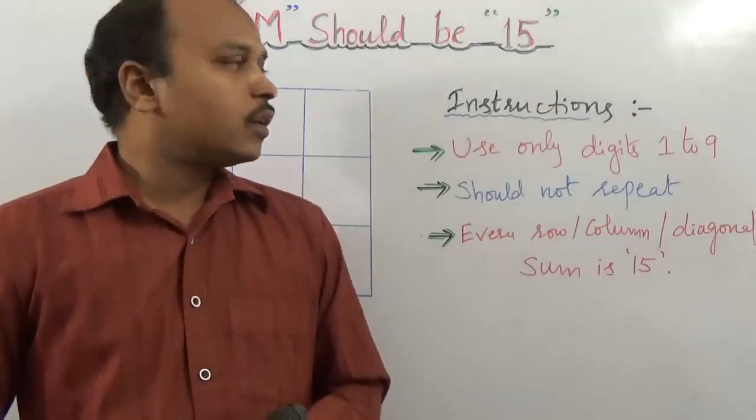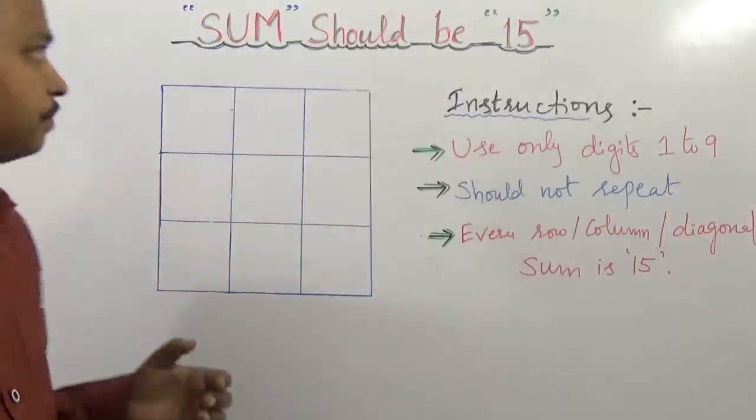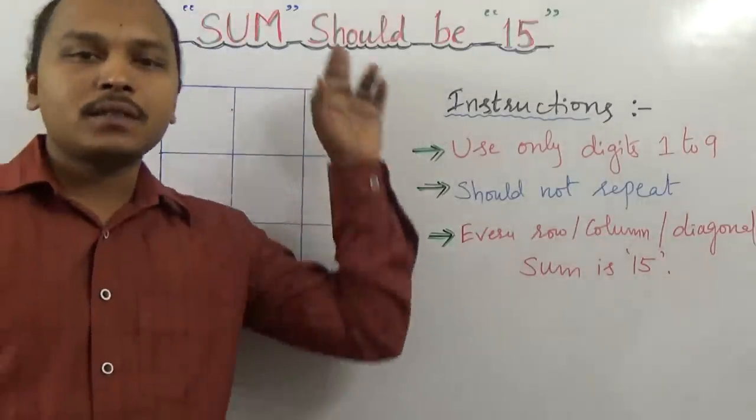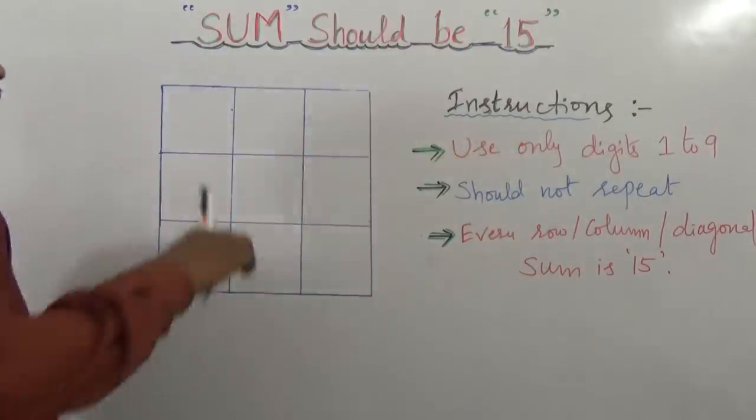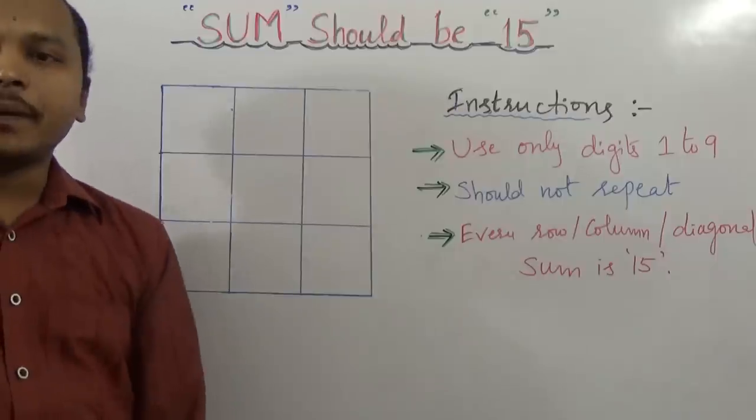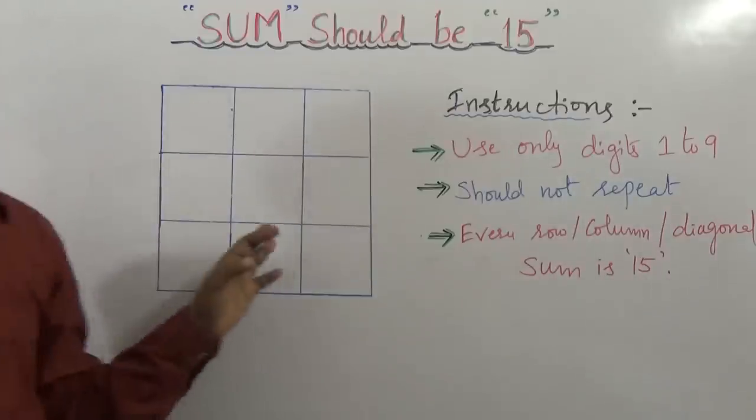Let me explain the question first. The name of the puzzle is sum should be 15. Your question is: here is one box, three by three, three rows and three columns.